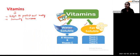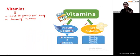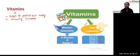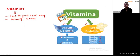Vitamins are of two types: water-soluble and fat-soluble. Water-soluble vitamins are those that dissolve in water — for example, vitamin B and vitamin C. Fat-soluble vitamins dissolve in fat — these are vitamins A, D, E, and K. All of these vitamins are very important, and deficiency of any one of them will result in some kind of problem.